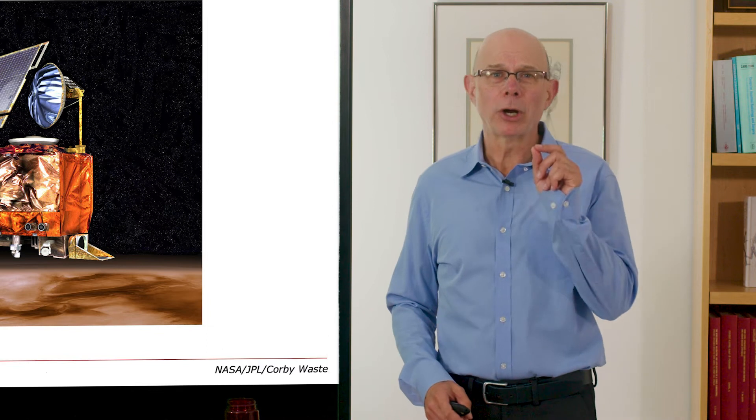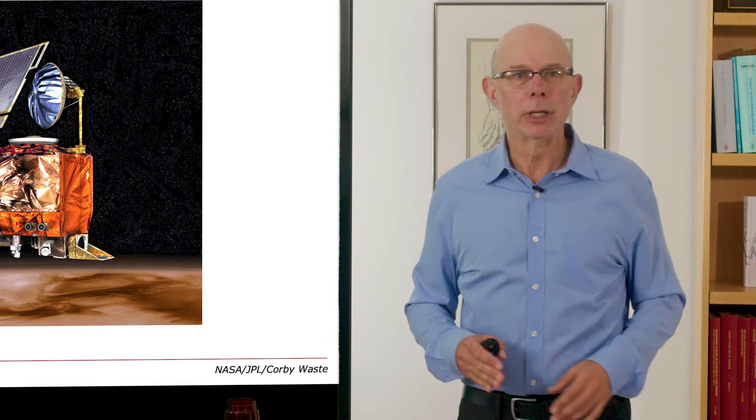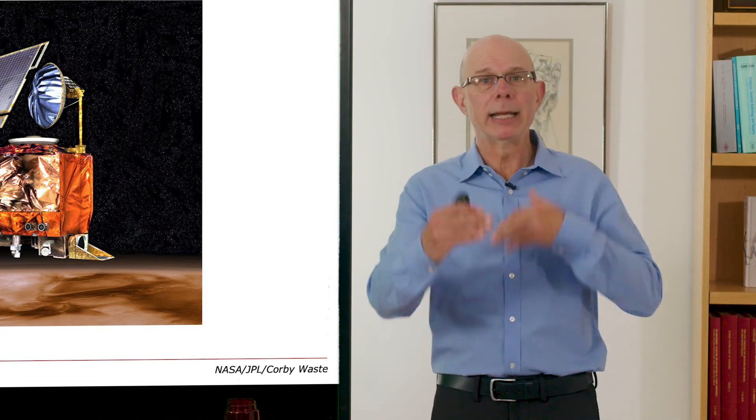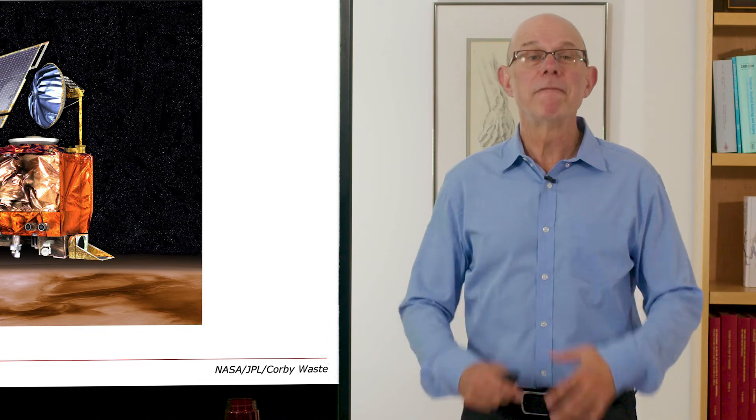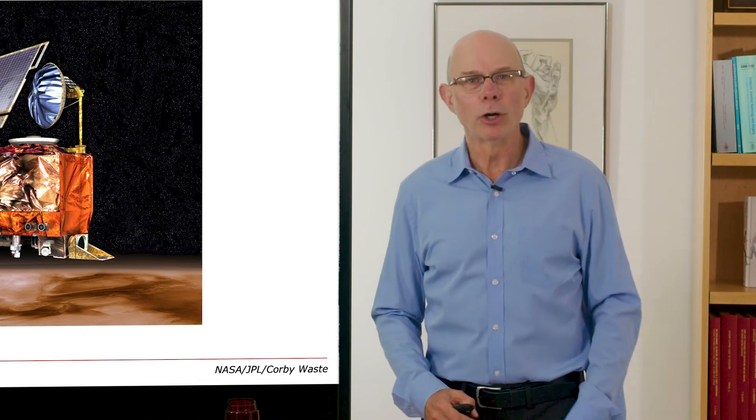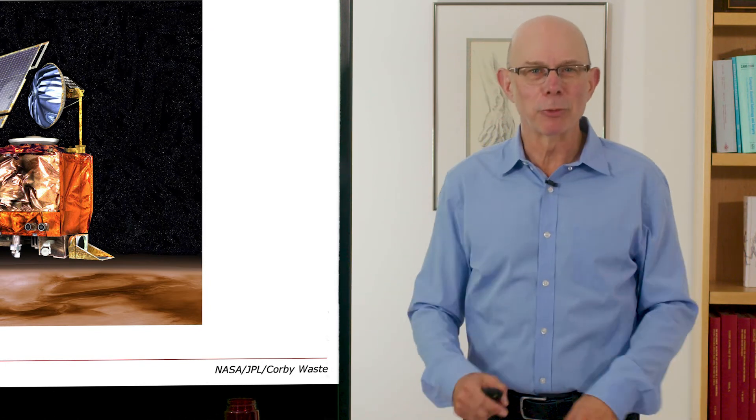Why? The software calculated the impulse that the thrusters needed in Imperial units, but the software calculating the trajectory was in SI units. So this very expensive Mars probe burned up as it went through the atmosphere.